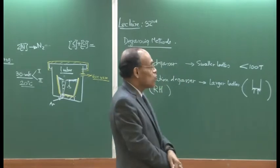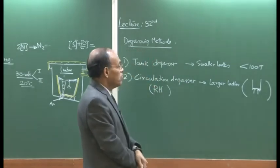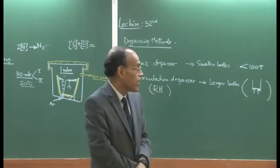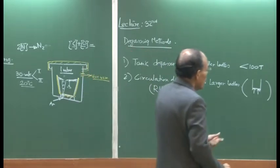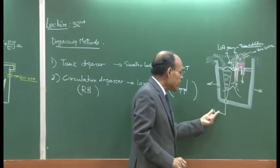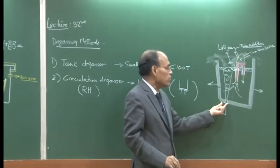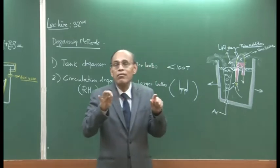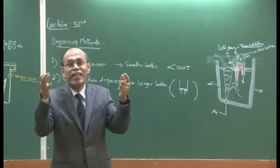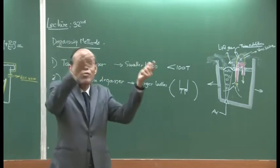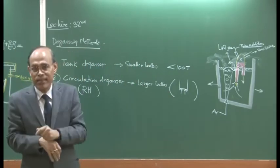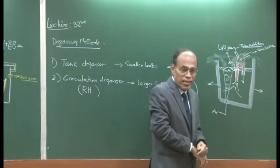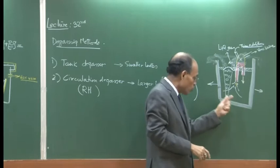Once vacuum degassing is over, all processing operations are complete. For production of clean steel, it is typical that once vacuum degassing is done, the ladle is lifted and taken by overhead crane directly to casting. No further processing is done after vacuum degassing in good steel making plants.